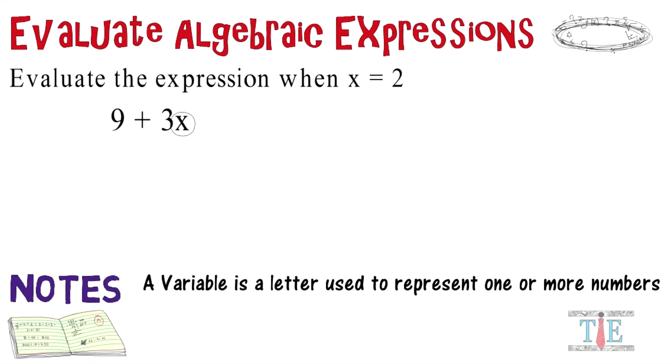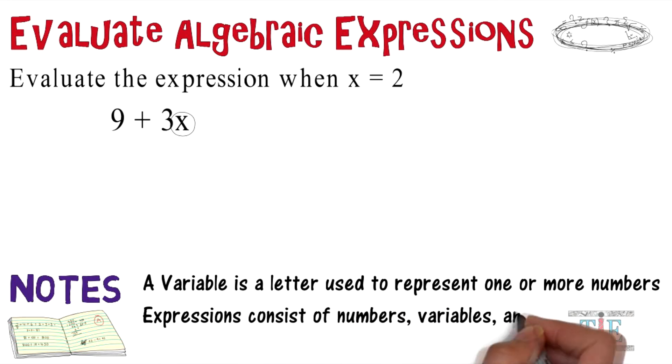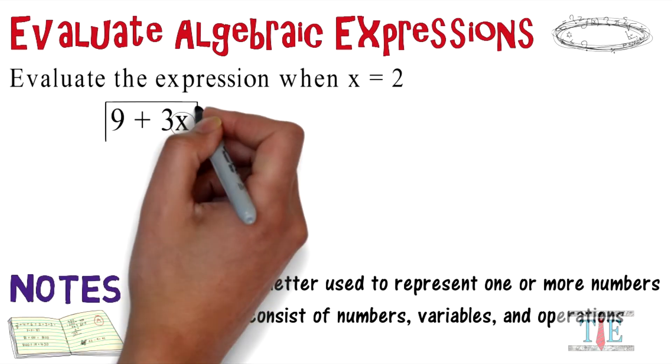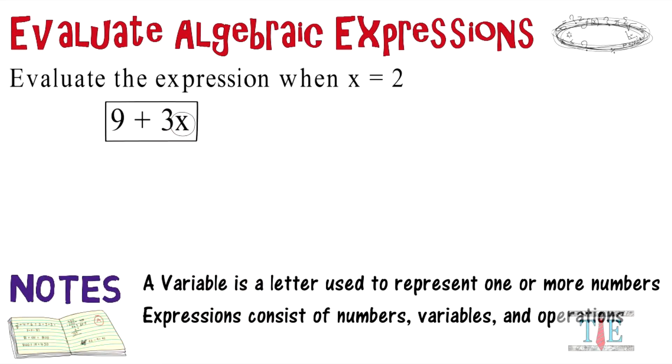x is the variable here. Next up, expressions consist of numbers, variables, and operations. Let's take a look at everything we have here. 9 plus 3x is an expression. Algebraic expressions in particular consist of at least one variable, which we have with the x we have here.